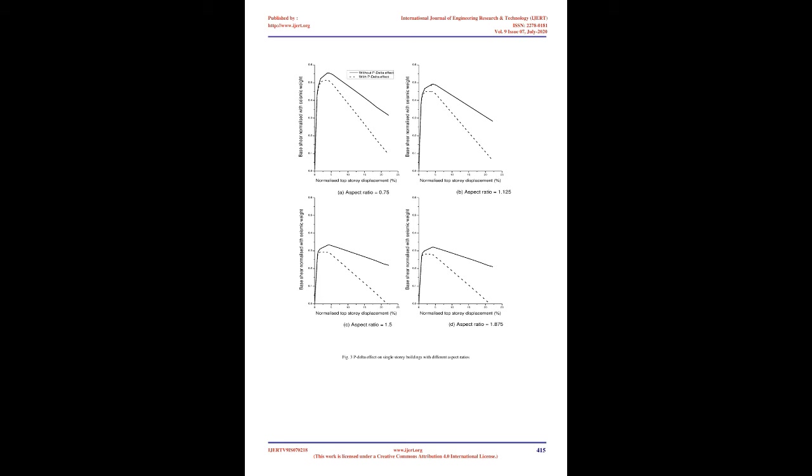In the present work, the SDOF concept is adopted for the MDOF example structures. After obtaining the pushover curve without P-Delta effect, the reduction in base shear for a given pushover step with known lateral displacement is estimated from P·Δ/H, where P is the total vertical load or seismic weight of the structure, Δ is the roof displacement or story drift, and H is the total height of the building or story height. This value is deducted from the known base shear to get the reduced base shear V*. The graph of V* vs. displacement gives the pushover curve including the P-Delta effect. Using this approach, the effect of P-Delta can be examined both at a global structural level or story level.